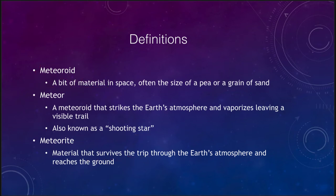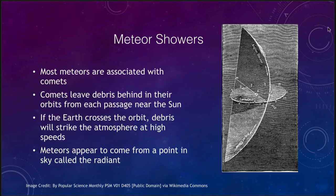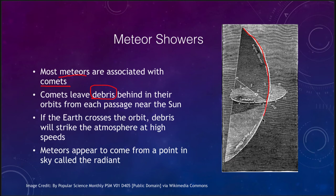Now let's look at where these come from, including what we call a meteor shower. Most meteors are associated with comets. When comets travel through the solar system — especially when they come close to the sun — material is vaporized off their surface, causing them to leave debris behind in their orbits. That material continues to travel along the orbit of the comet, and this happens each time the comet passes close to the sun.